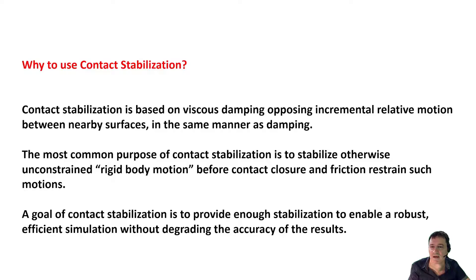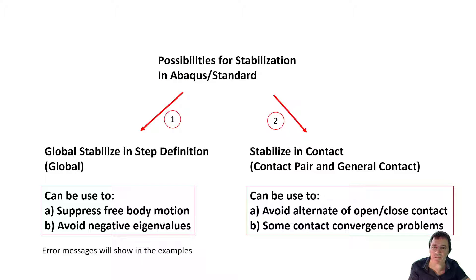Stabilization can be divided into two possibilities: a global stabilize and a stabilize for contact. The global stabilize can be used to suppress free body motions to avoid negative eigenvalues, while contact stabilization is used to avoid alternating opening and closing of contact status and some contact convergence problems. The main goal is to obtain a well-converging calculation. An analysis of the nodes and warnings in the message file can help you find the best method for defining a stabilization approach.